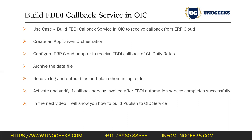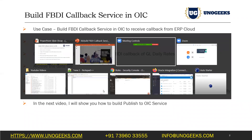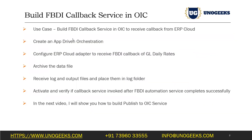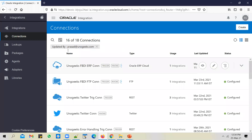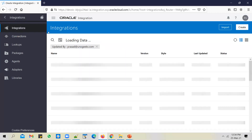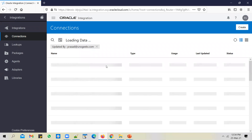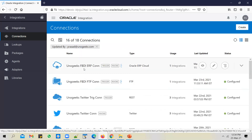Let's go ahead and build a callback service. Log in to the Oracle Integration Cloud instance. For this callback service, we need an FTP connection and an ERP Cloud connection. We have created both of them in the previous video where we built the FPDA automation service. We will use the same connections — the FPDA FTP connection and FPDA ERP connection.